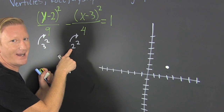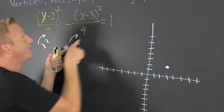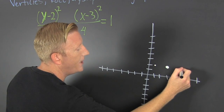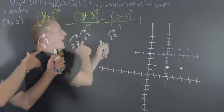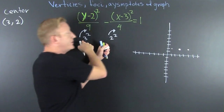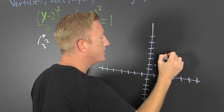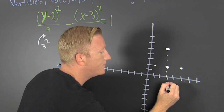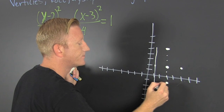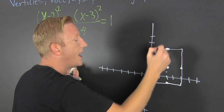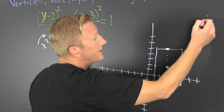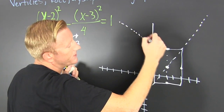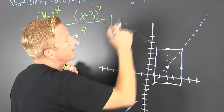From my center, how far in the x direction do I go? I go 2 in the x direction — 2 left, bam, 2 right, bam — because it's under the x. Then how far in the y direction? I go 3 in the y direction: 3 up, bam, and 3 down, bam. Then I make a box and connect the diagonals.